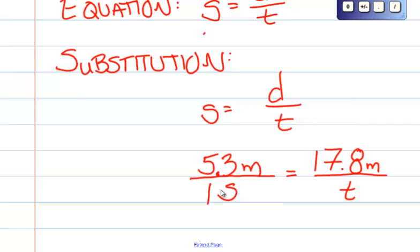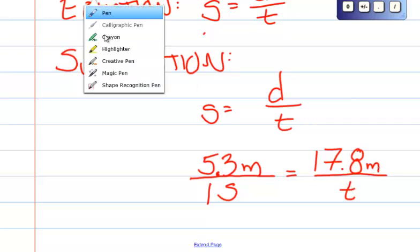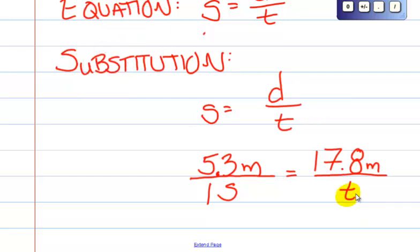The time is our unknown. So this is one second. 5.3 meters per every one second equals 17.8 meters over time. Time, remember, is what it is that we are trying to solve for.